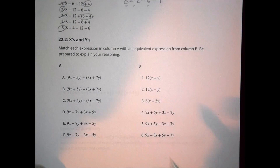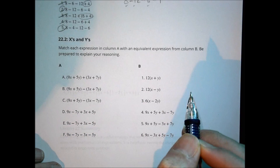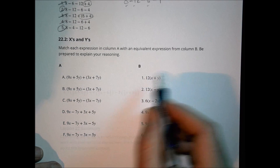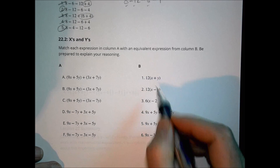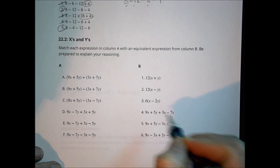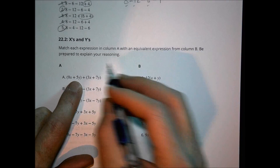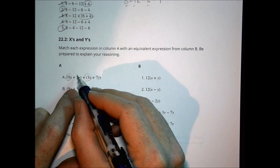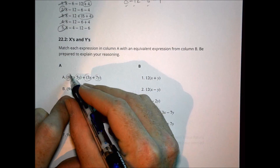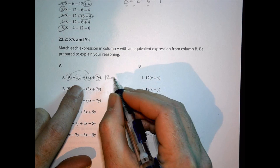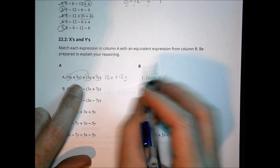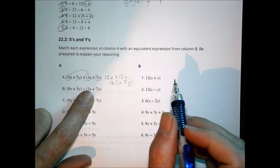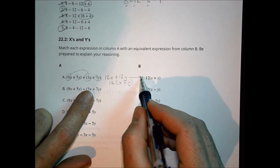For Section 2, match each expression in Column A with an equivalent expression from Column B and be prepared to explain your reasoning. We have expressions with parentheses and some where you've done reverse distributing — factoring something out, or rewriting. For the first one, I can rewrite it as 9x plus 3x, and 5y plus 7y. The 9 and 3 combine to make 12x, and 5 and 7 combine to make 12y, so I can factor out a 12 and I'm left with x plus y. That one is equivalent to the one right across from it.